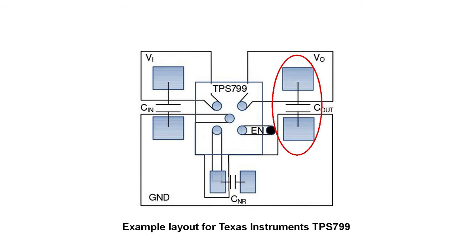Mistake number eight is incorrect PCB landing patterns. All PCB design software tools include libraries of commonly used electronic components. These libraries include both the schematic symbol as well as the PCB landing pattern. Problems begin when you use components not included in these libraries, meaning the engineer has to manually draw the schematic symbol and the PCB landing pattern, or import it from a third-party source like SnapEDA. It's very easy to make mistakes when drawing a landing pattern — for example, if you get the pin-to-pin spacing off by a fraction of a millimeter, it will make it impossible to solder the part on the board.